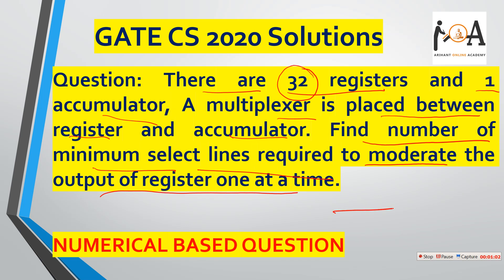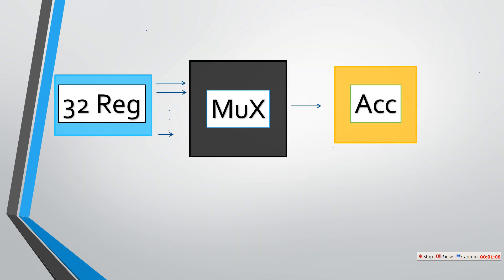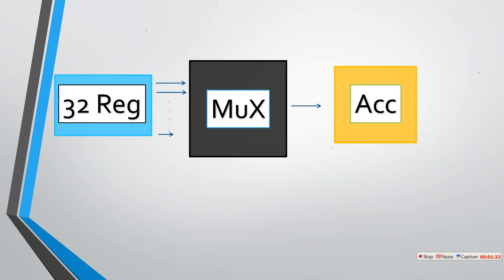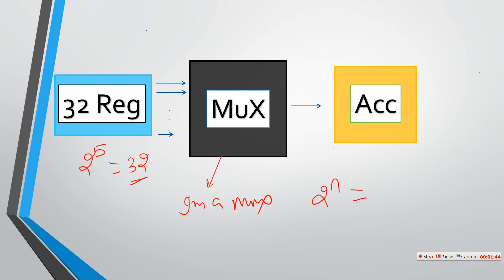It was a numerical type question and we have to feed the correct numerical value. You can apply the approach like this: 32 registers are there, and we need to find the number of minimum select lines. In a multiplexer, the total number of inputs is 2 to the power n, where n equals the number of select lines.